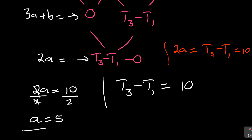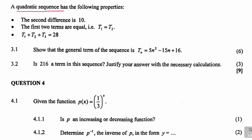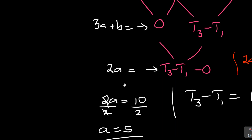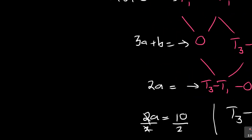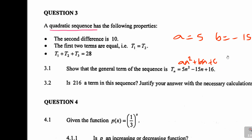Good — a equals 5. Now I'm working towards showing that a equals 5, b equals negative 15, and c equals 16 in tn equals an² plus bn plus c. For the next equation, 3a plus b equals 0. Substituting a equals 5: 3 times 5 plus b equals 0, so 15 plus b equals 0, meaning b equals negative 15. That matches.